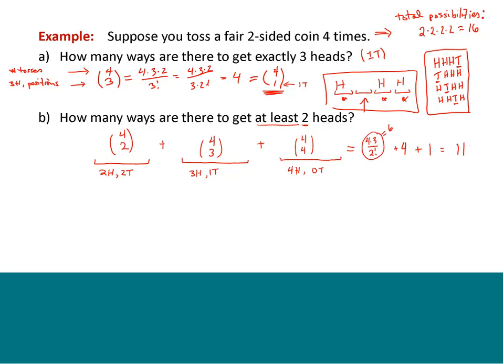You could also do this the reverse way: count how many ways to get fewer than two heads (exactly one head or no heads), add those cases, and subtract from 16. That's the complement approach. Also, the fastest way to compute N choose K: start with N on top, multiply by every integer less than N until you have the same number of factors as the bottom number K, then divide by K factorial. So for 4 choose 2, it's 4 times 3 divided by 2 — stopping at the second factor. That's a truncated factorial.